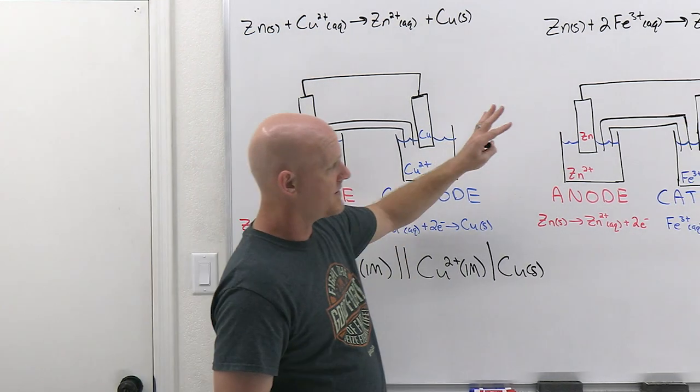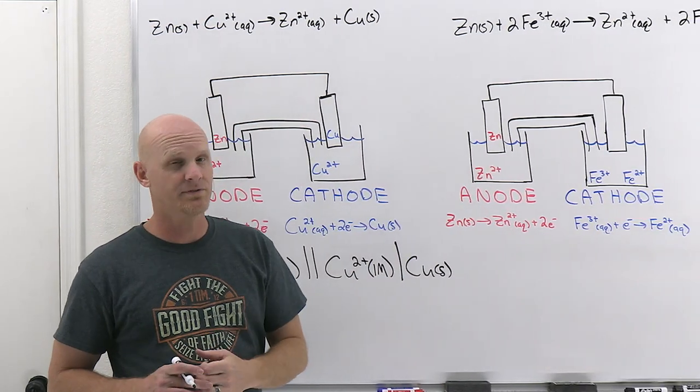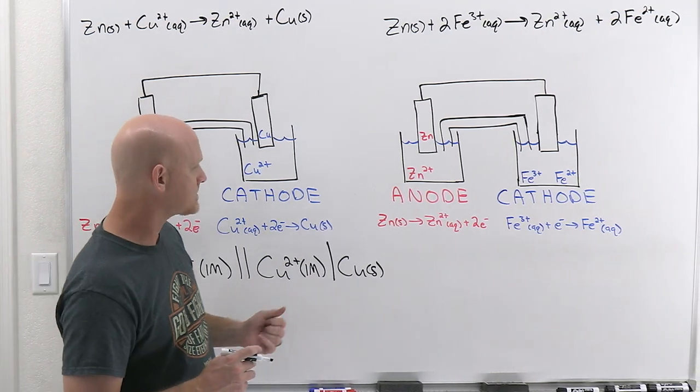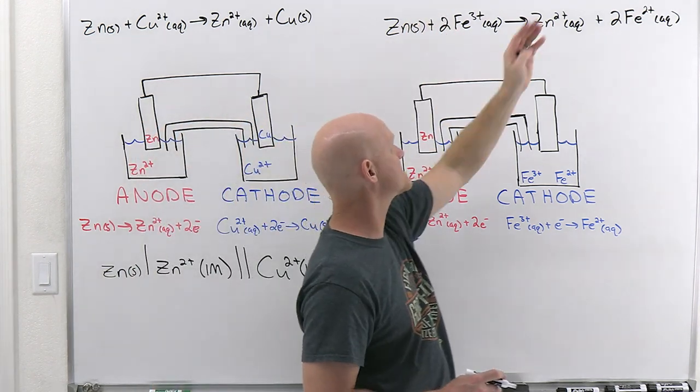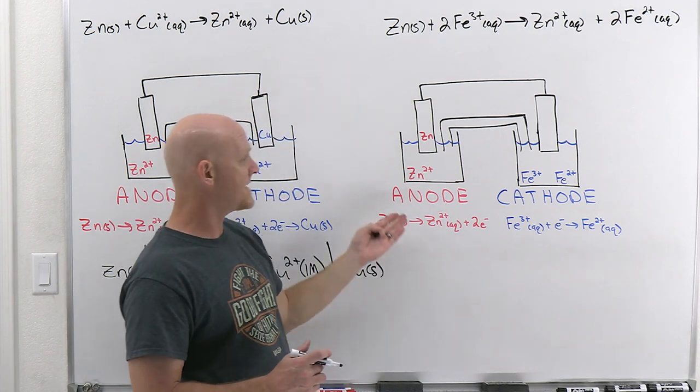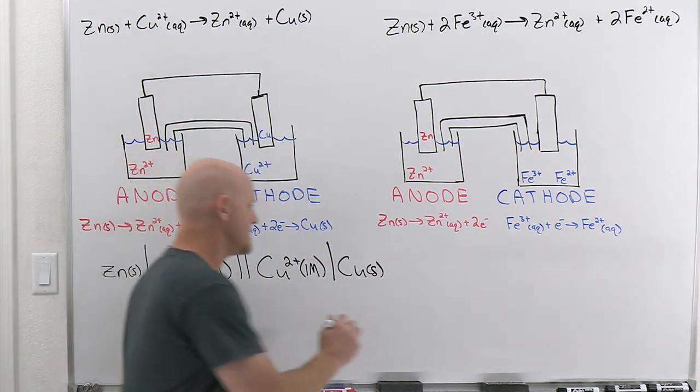Now if we do another example here, I wanted to give you a little bit different example where we've got an inert electrode involved, so you kind of see how that changes things ever so subtly here. All right, so in this one here, we've got zinc plus 2Fe3+, going to zinc 2+, plus 2Fe2+, and the big thing here, I'm leaving the anode exactly the same.